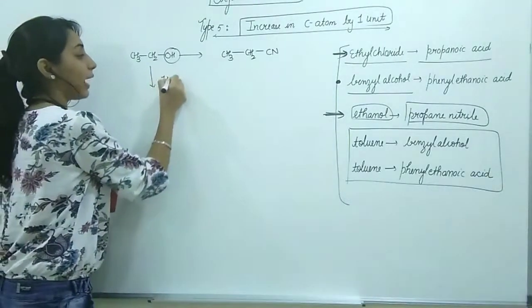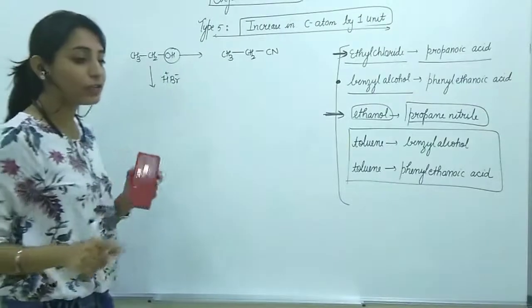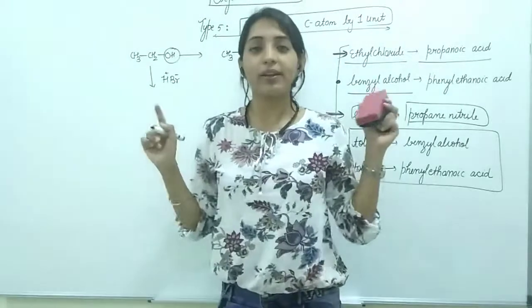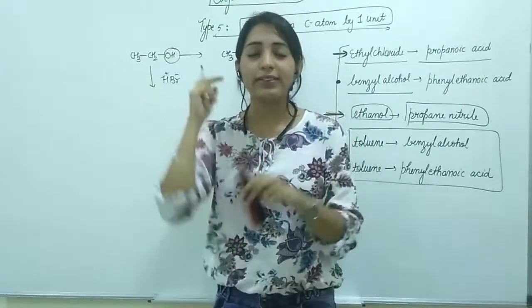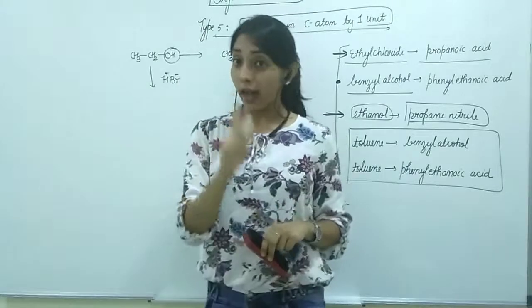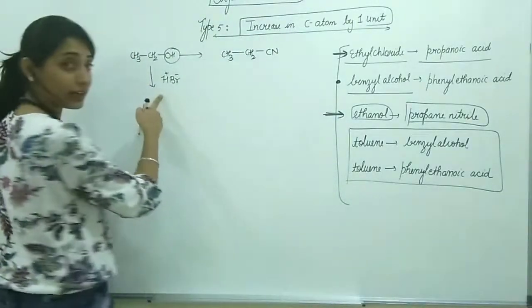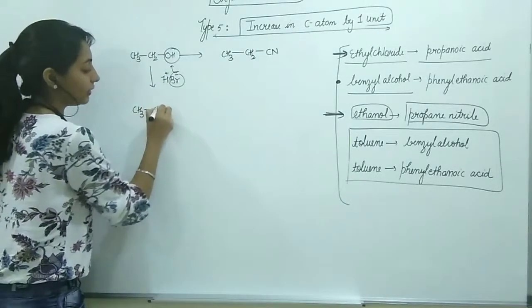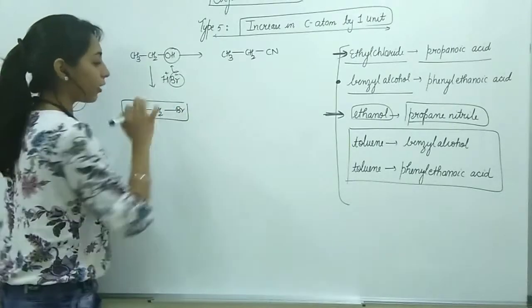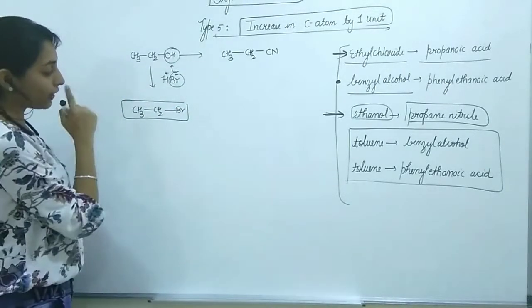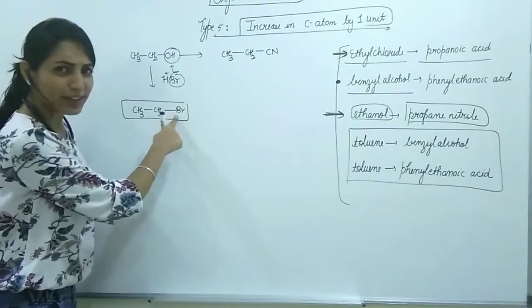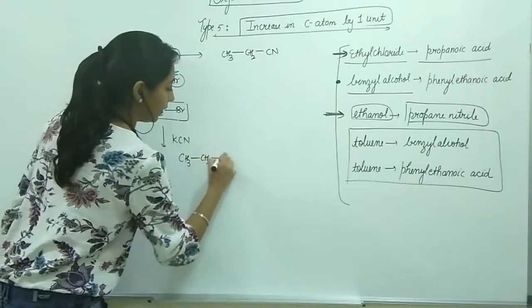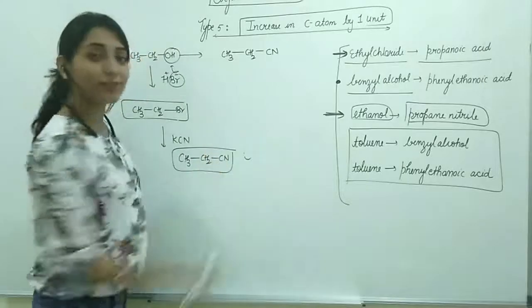I can simply add HBr because I told you in my last video: whenever you're in doubt or confusion, close your eyes and think about alkyl halides. I know how to convert alcohol to alkyl halide - treat it with HBr. The Br comes here and we get CH3CH2Br. Now something good is happening. The Br can be easily removed by adding KCN, so I get CH3CH2CN.